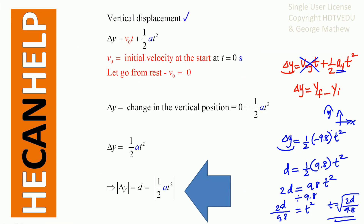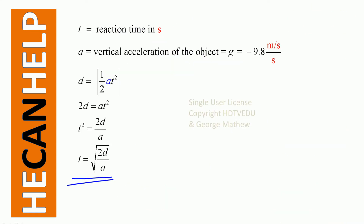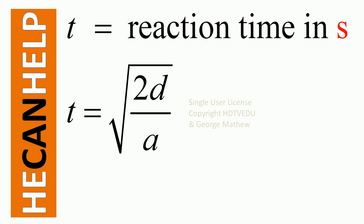Vertical displacement is equal to v₀t plus one-half at squared. So delta y equals v₀t plus one-half at squared. Initial velocity at the start is equal to 0, so we can get rid of the first v₀t term. We get delta y equals d equals one-half at squared. The reaction time t in seconds is equal to the square root of 2d over a.